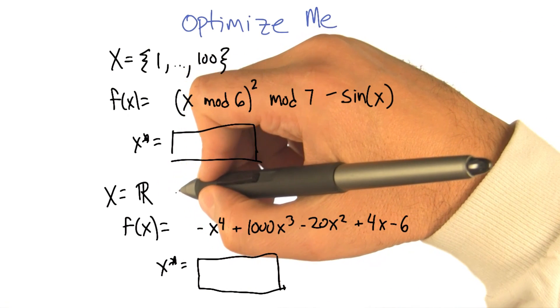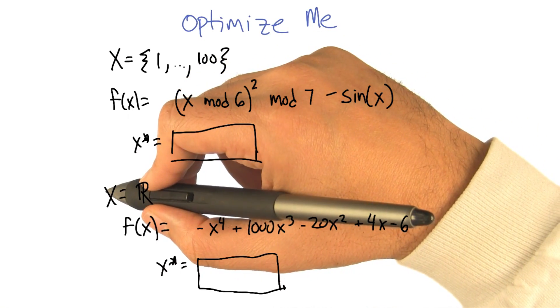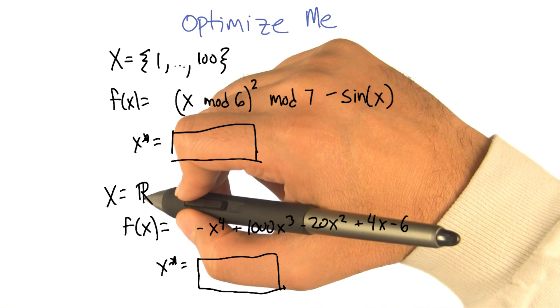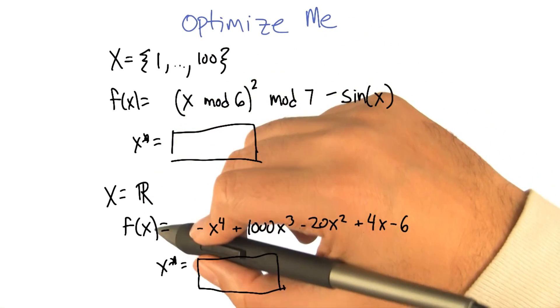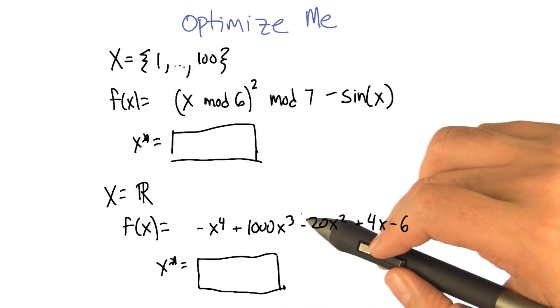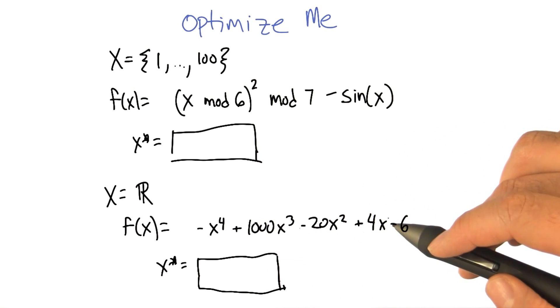So, okay, good. And the second problem, we've got x as the set of real numbers. So any possible number in the reals. And the function that we're trying to optimize is negative x to the fourth plus 1,000 x cubed minus 20 x squared plus 4 x minus 6.